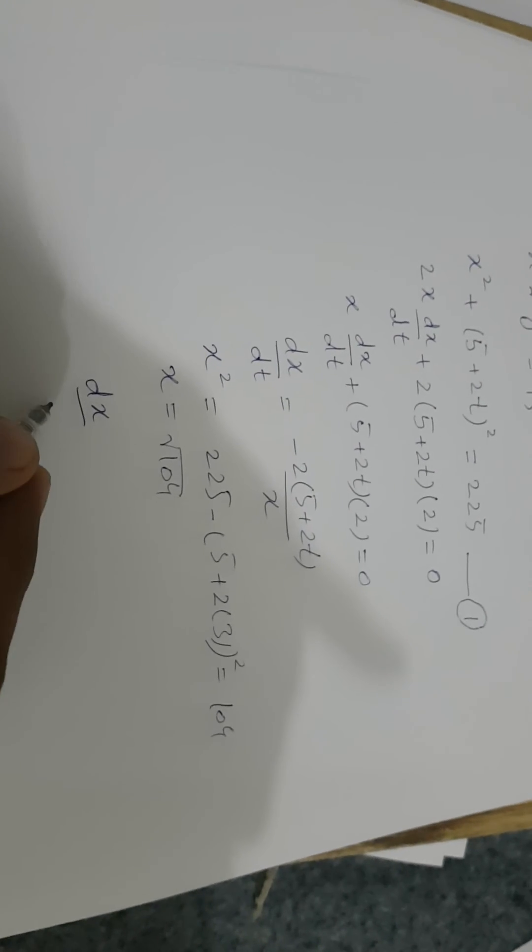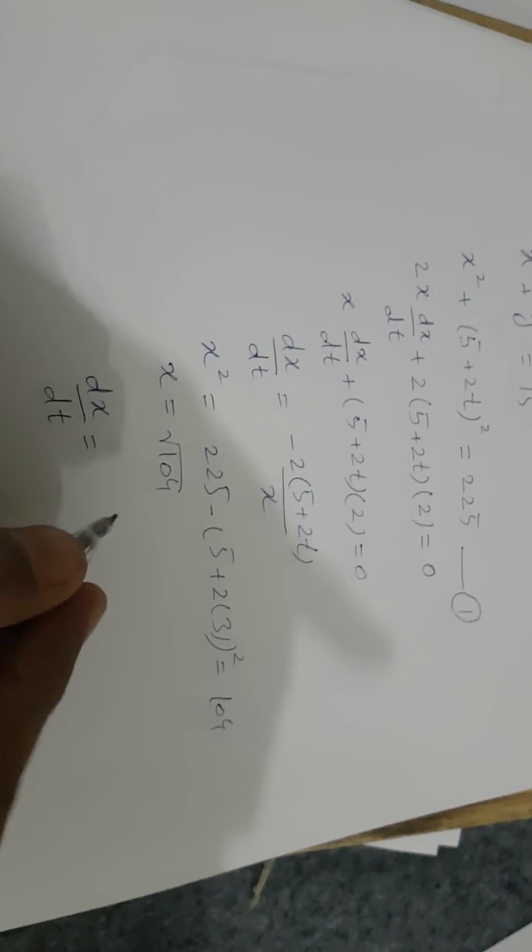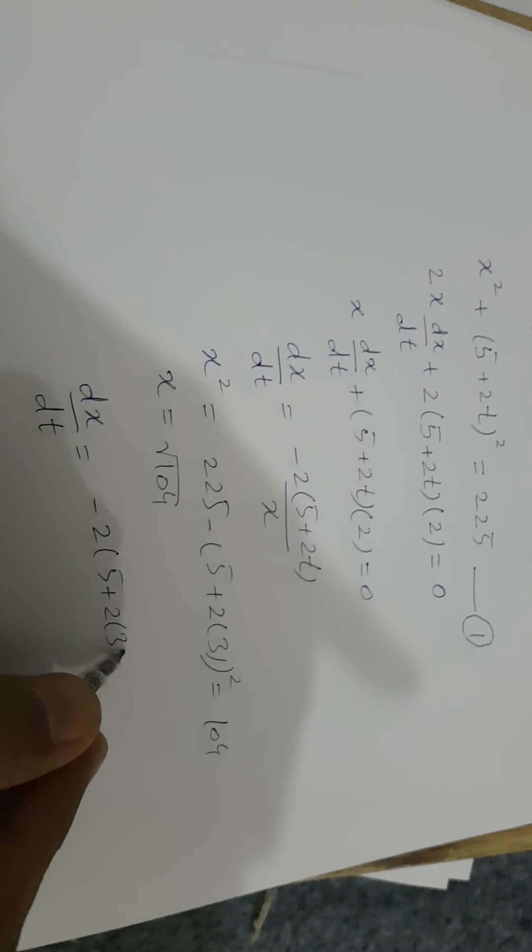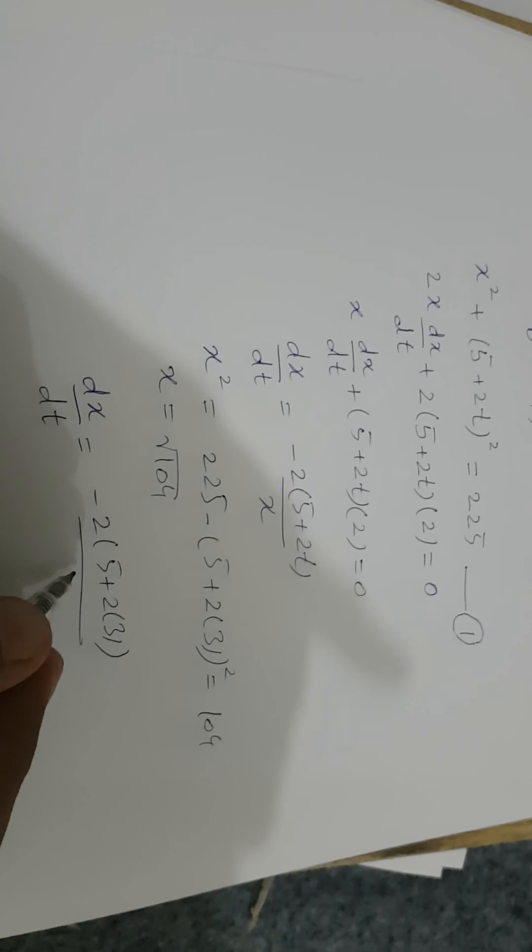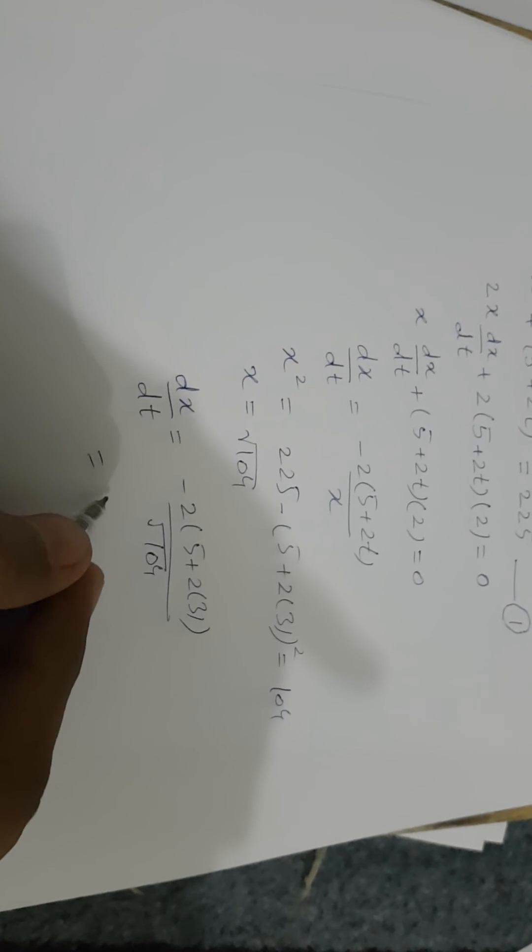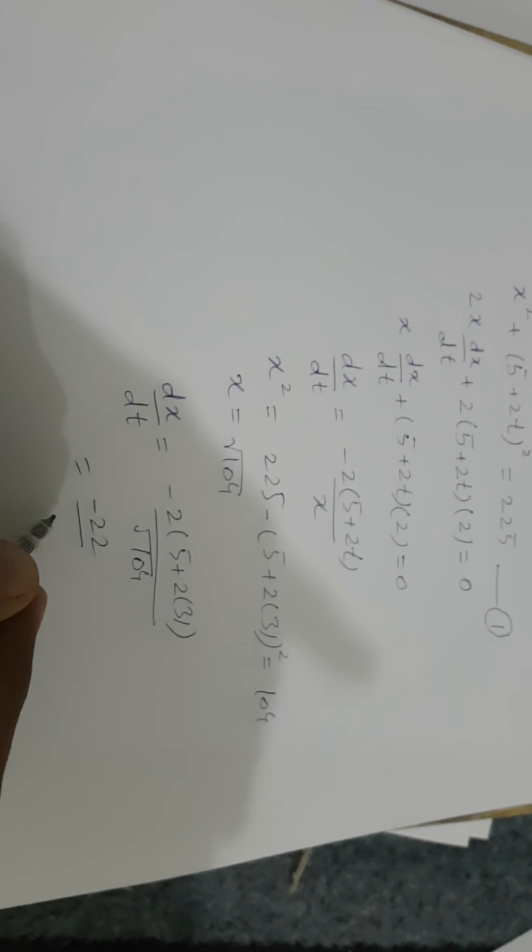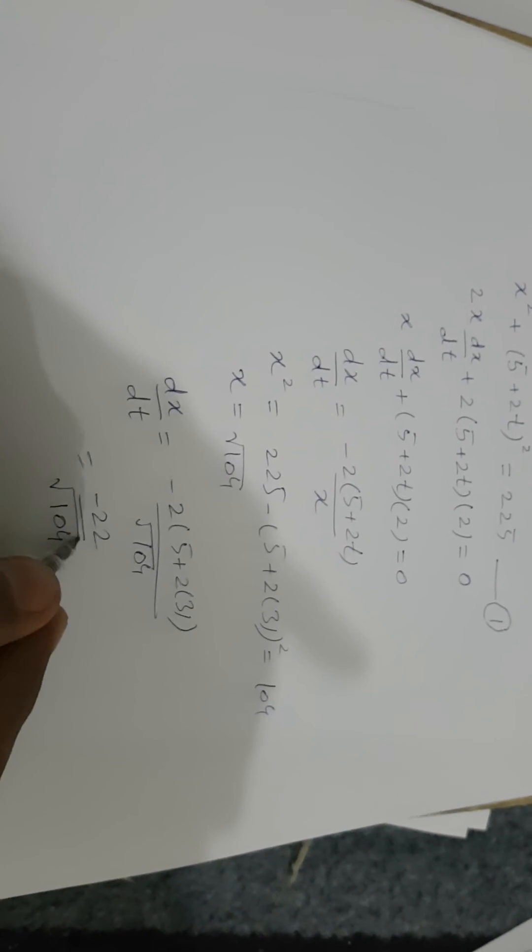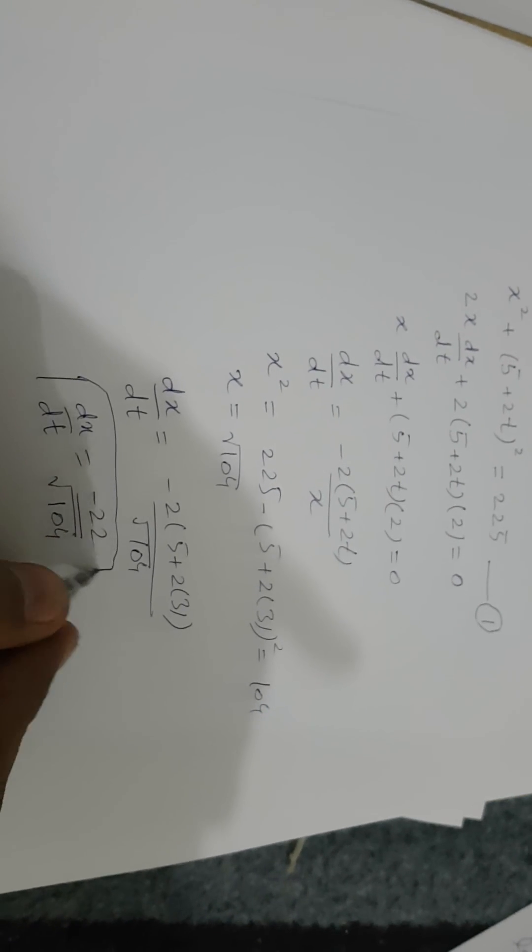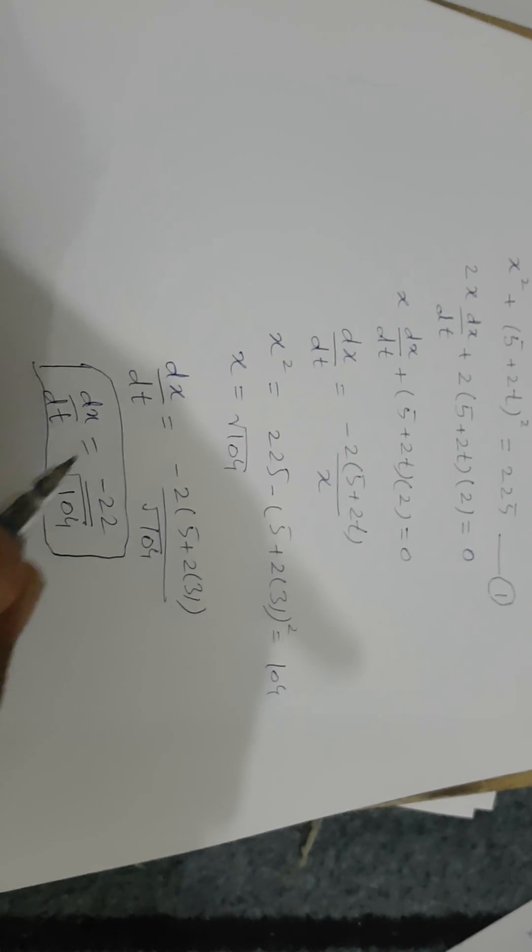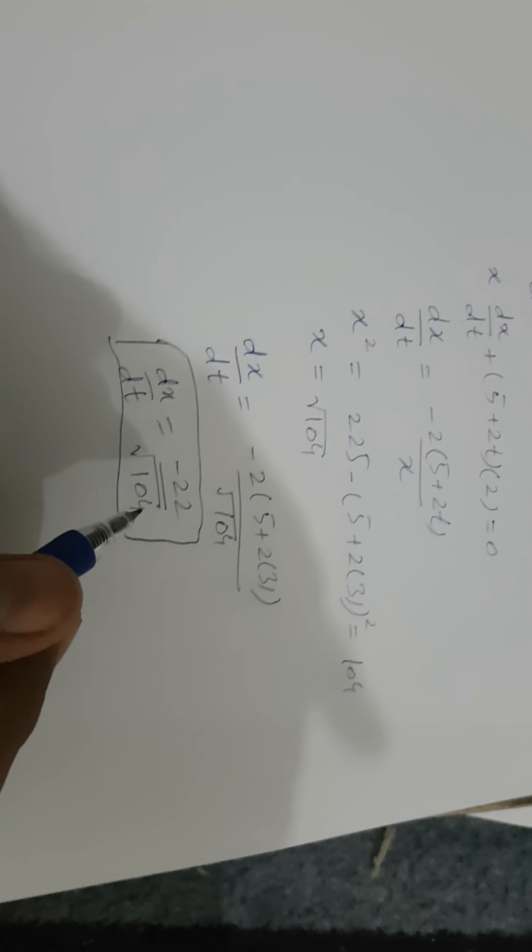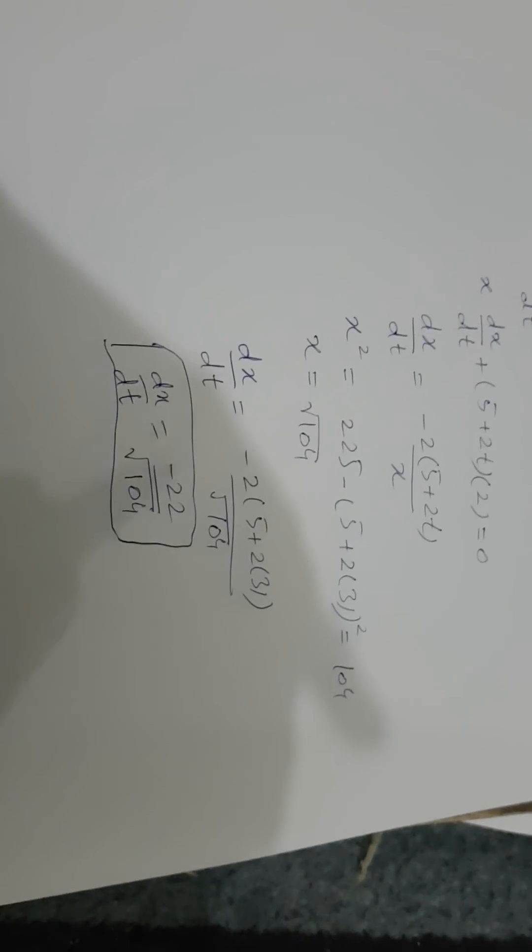So dx/dt for t equals 3 is -2(5 + 2(3))/√104 = -22/√104. This is your final answer, and using a calculator, you can round your answer to 3 decimal places or more.